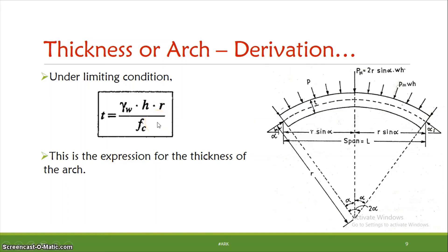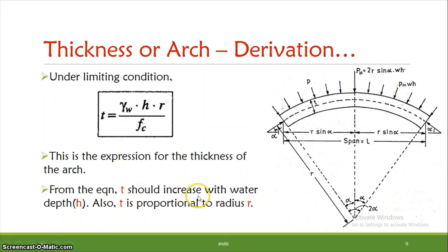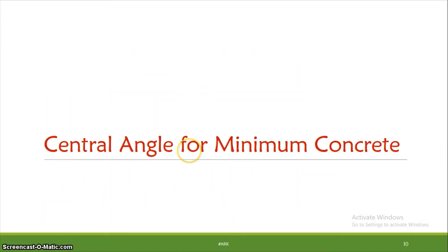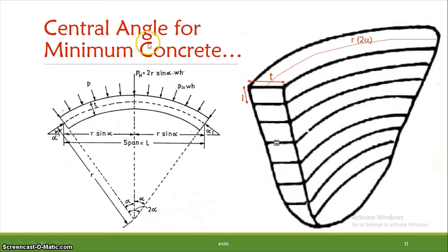The thickness is directly proportional to H (depth of water) and also to the radius r. Next, we will derive the equation for the central angle for minimum concrete volume. The most economical angle for an arch dam is 133° 34', which is a very important derivation.